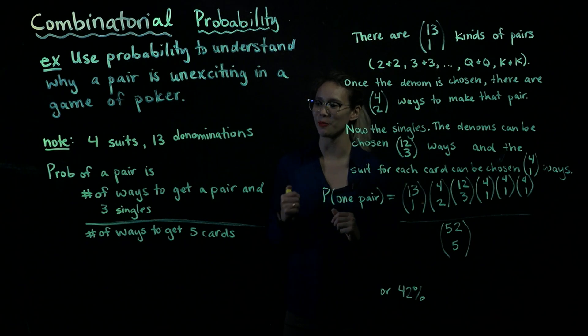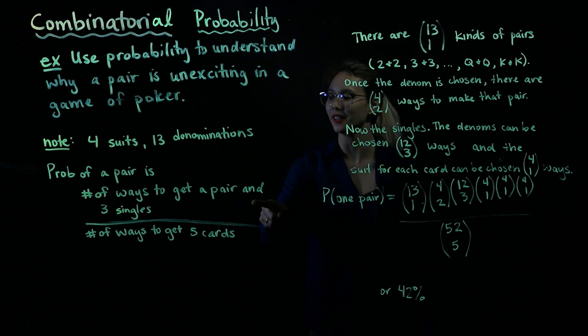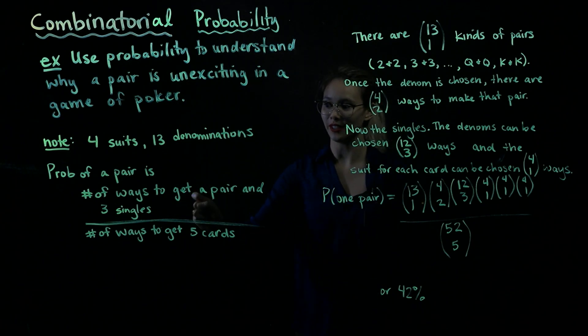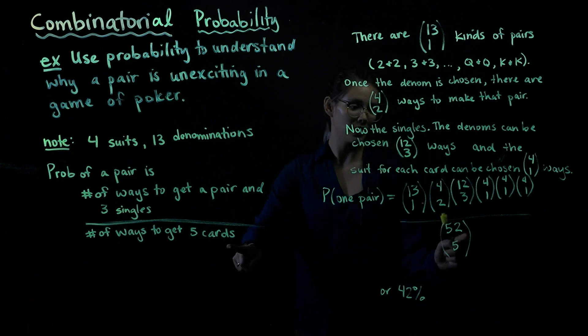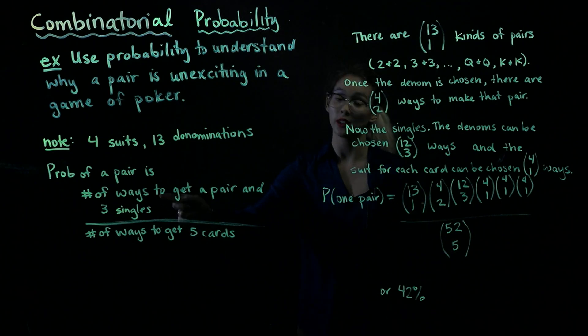The probability of a pair is the number of ways to get a pair and three singles divided by the number of ways to get five cards in general. So we have 52 cards, the number of ways to get five cards in general is just 52 choose 5. The denominator is pretty easy, we'll need to think a little bit more about how to get the numerator.